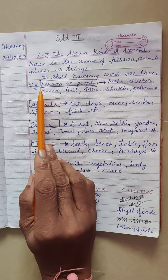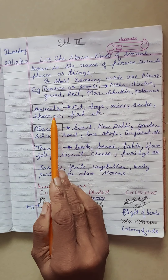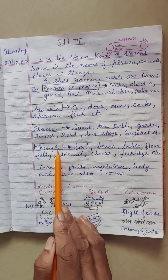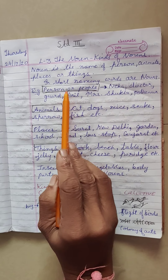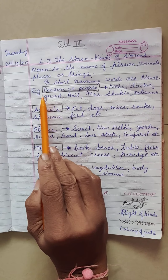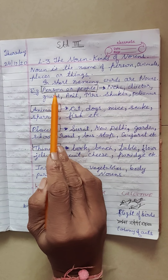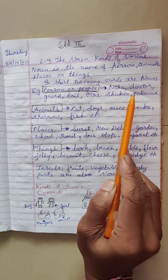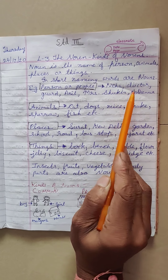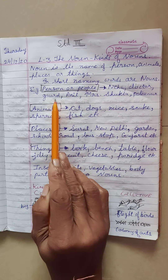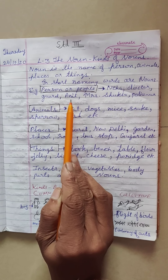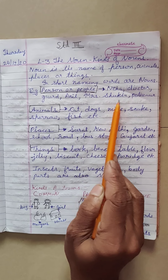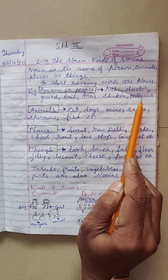Here are some examples related to persons, animals, places or things. Persons or people: Neha, doctor, guard, Anil, Mrs. Sukla, policemen. These are the names of persons or people.